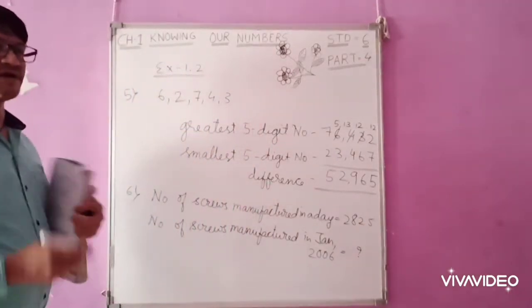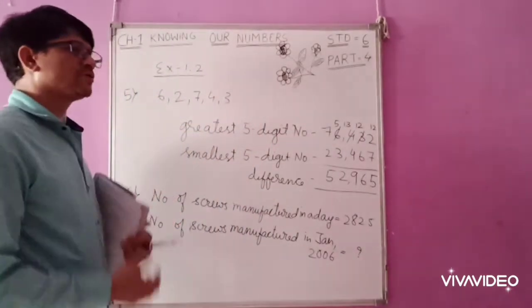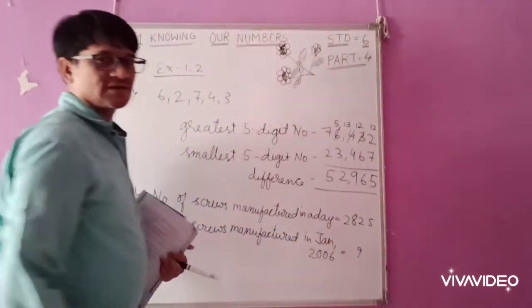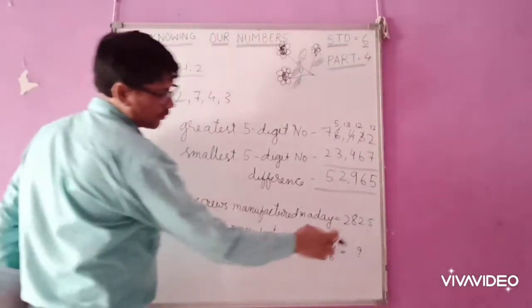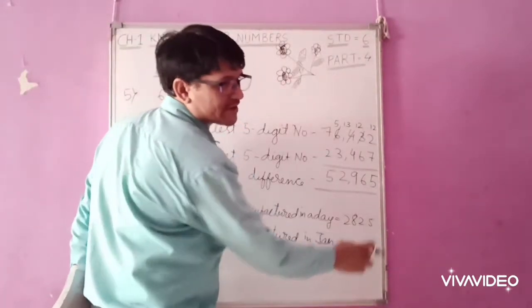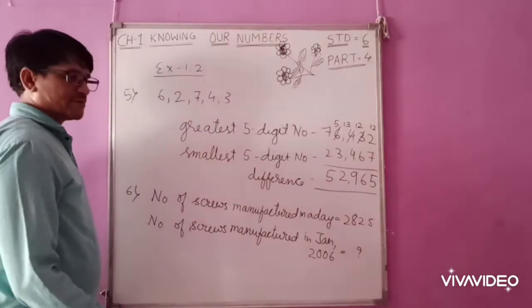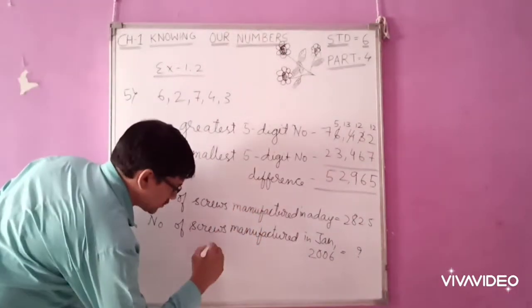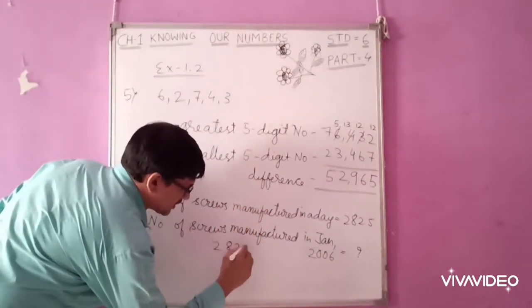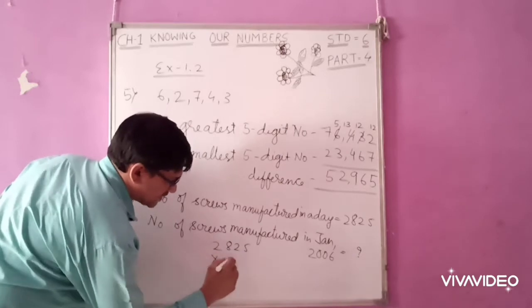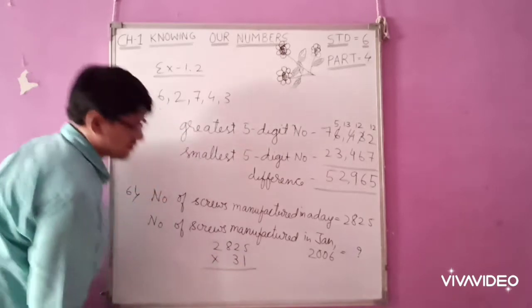Number of screws manufactured in January. What is the year? January 2006. What has to be done here? Now, you know January has 31 days. So one day, 2,825 screws are produced. Now, so 2,825 multiplied by 31.